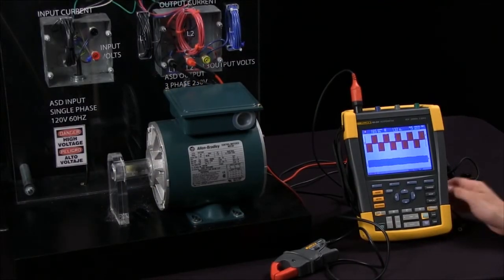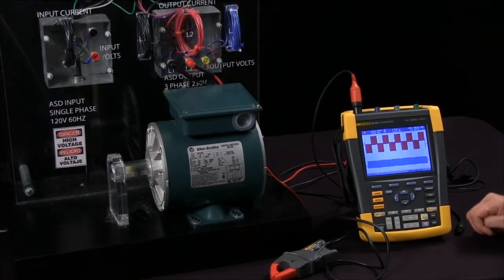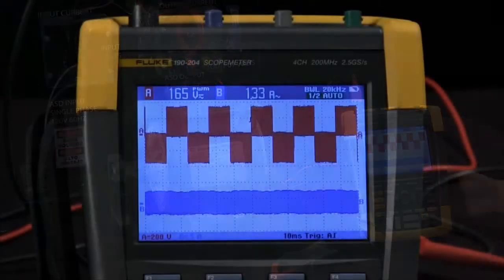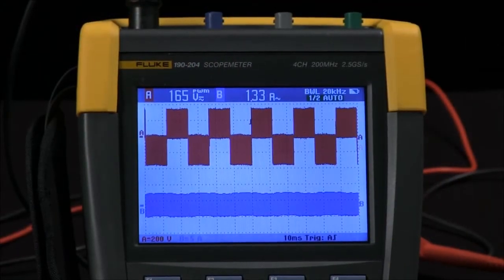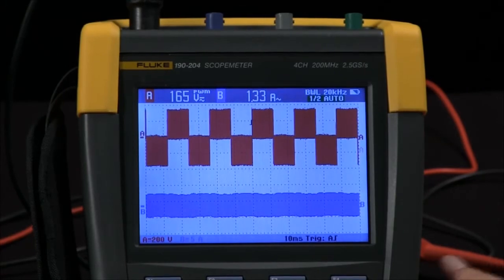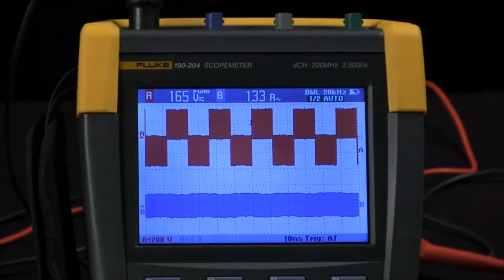Today I'd like to discuss taking a current measurement with a 190 series scope meter. In this example I am using the four channel version of our scope meter, but we do also offer this in a two channel model.